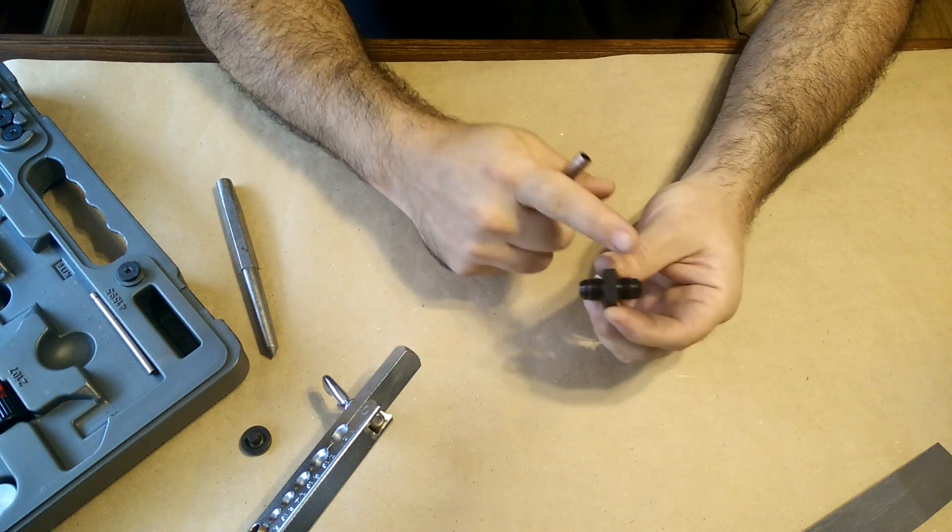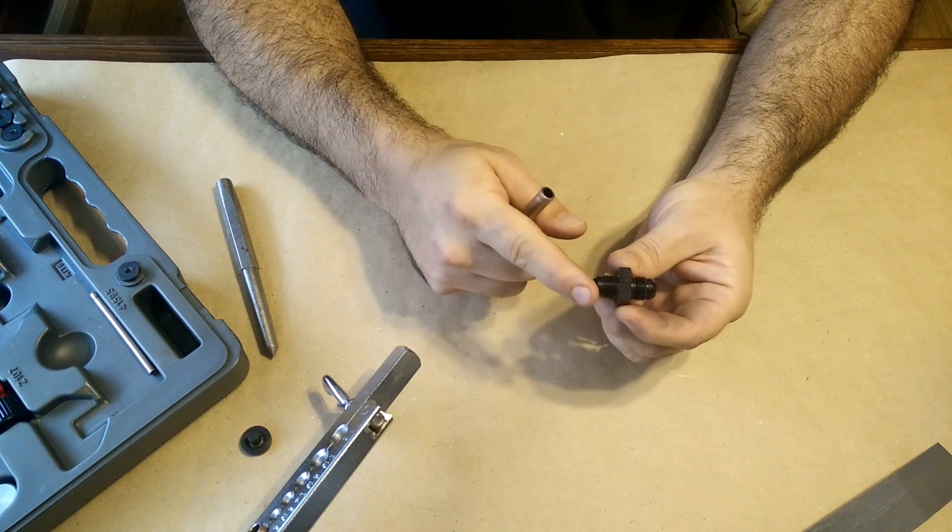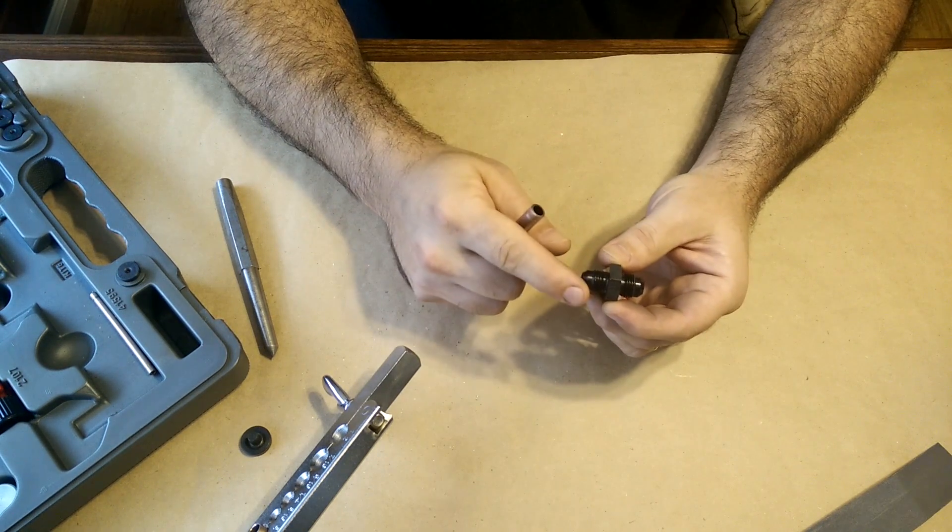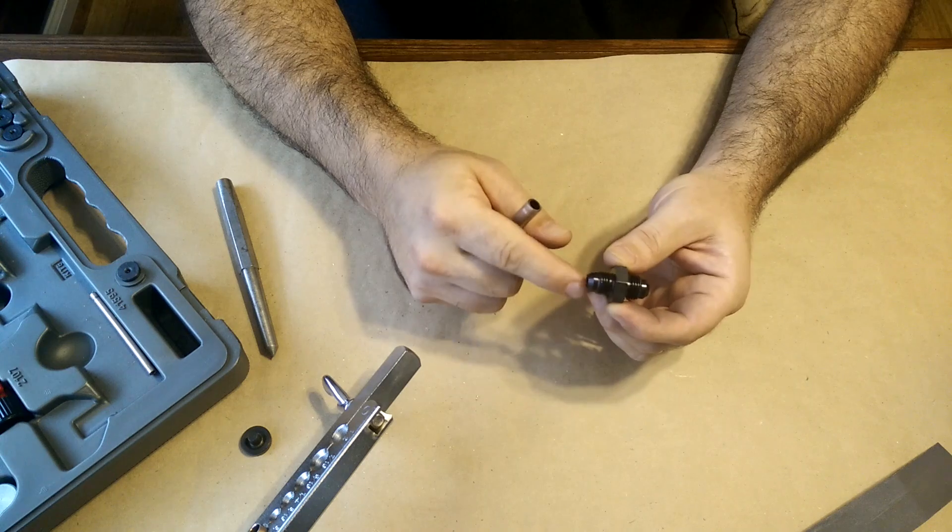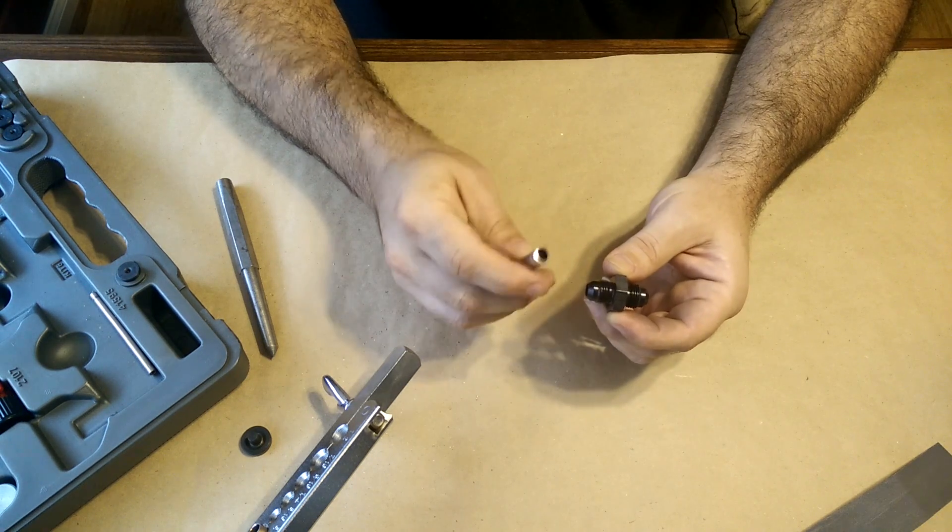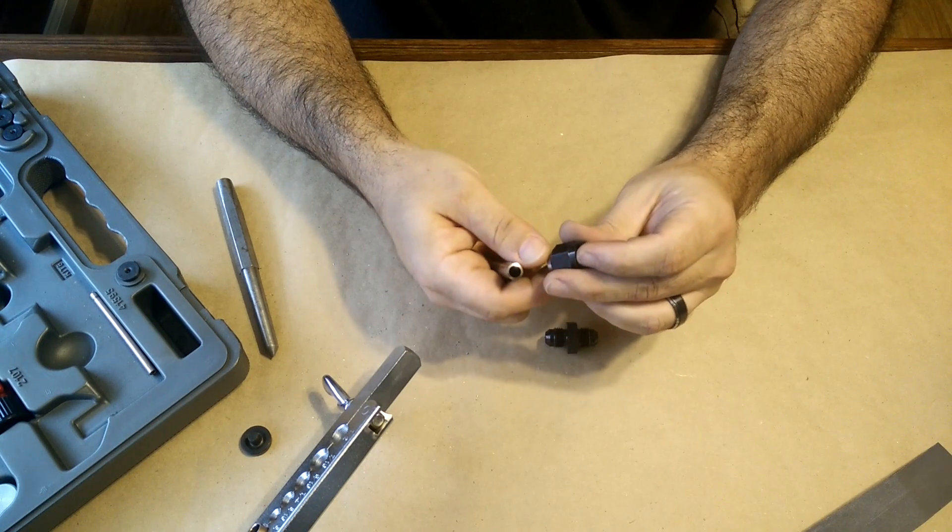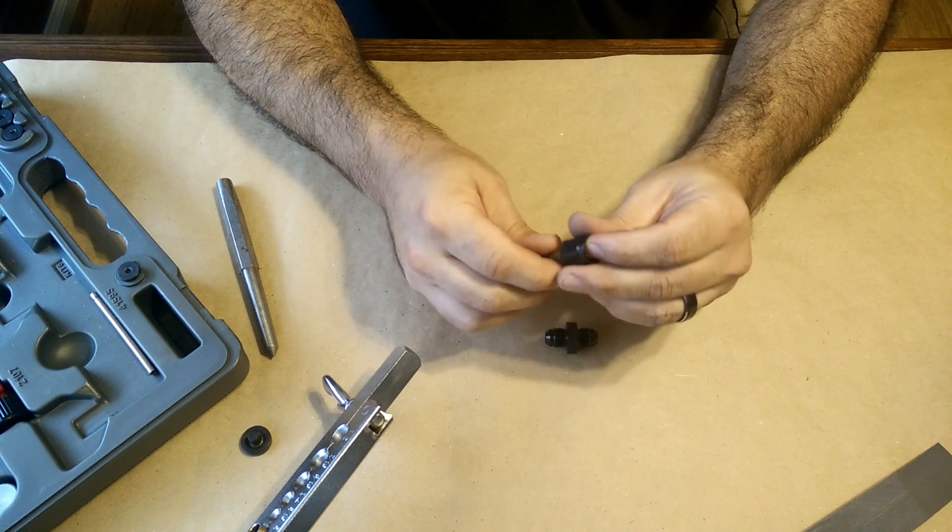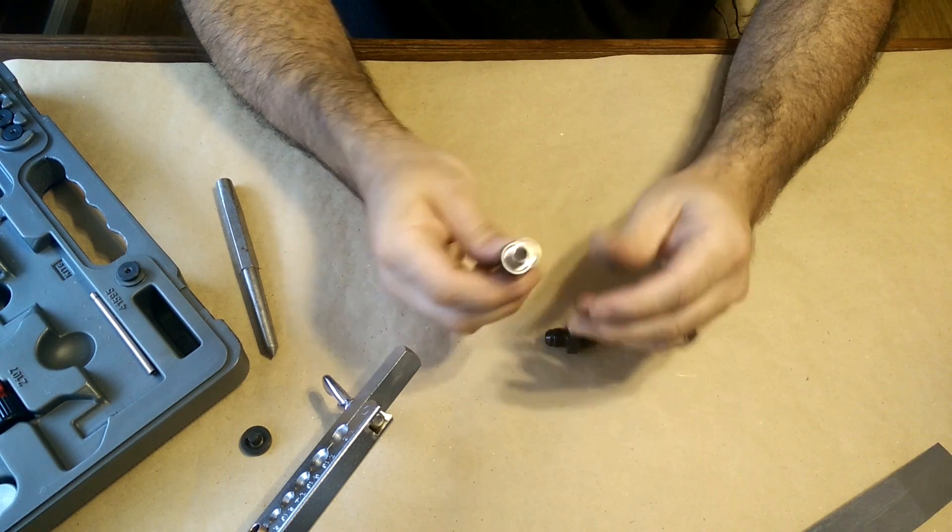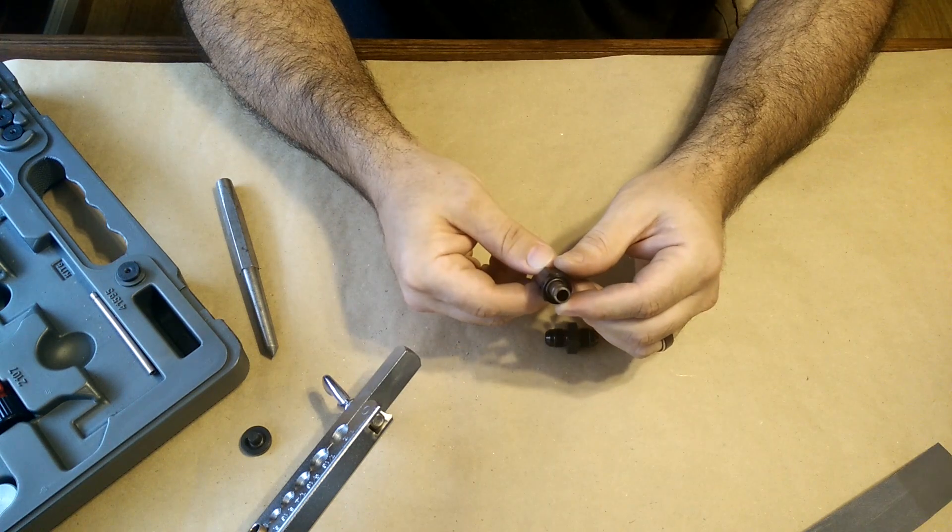So this is called a male-to-male AN union. So one way to do that is to flare using that rigid tool that I demonstrated and use the appropriate tube nuts and sleeves here.